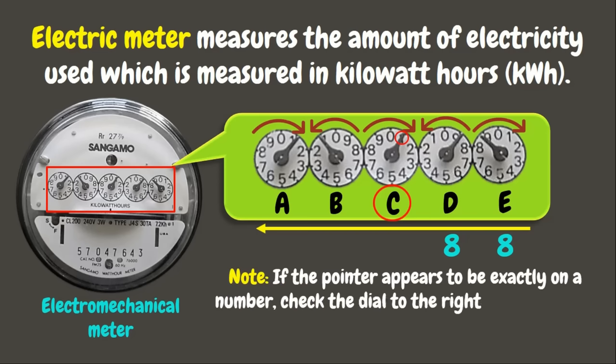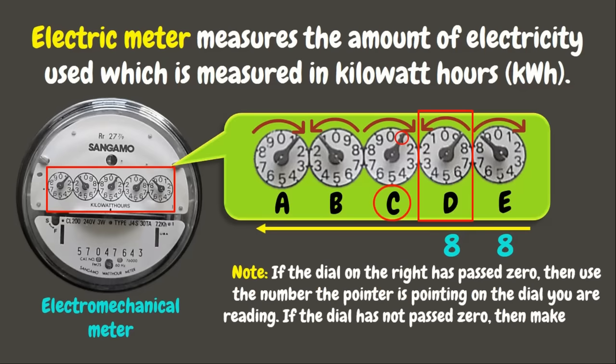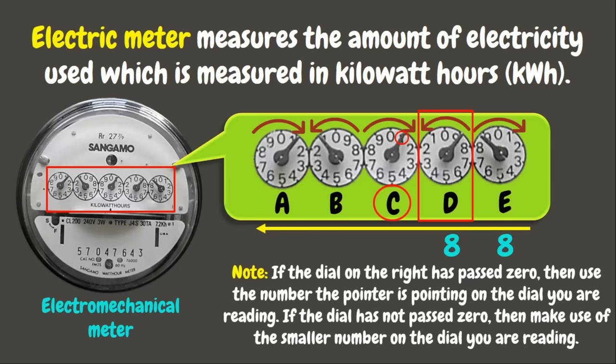We have to take note that if the pointer appears to be exactly on a number, we have to check the dial to its right to find out the correct reading. If the dial on the right has passed 0, then use the number the pointer is pointing to. If the dial has not yet passed 0, then record the smaller number. Here, dial D points between 8 and 9 — since it hasn't passed 0, instead of recording 1, we record 0, which is the smaller number than 1.